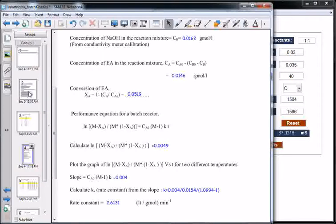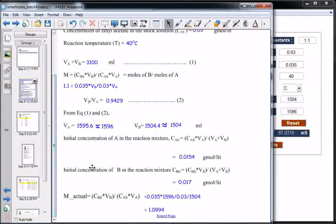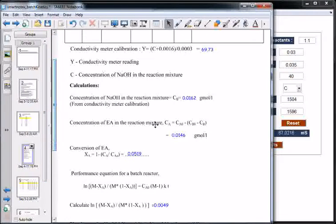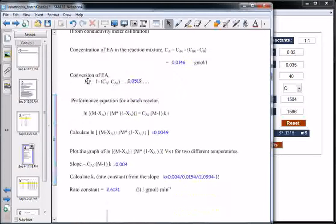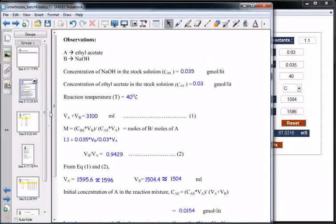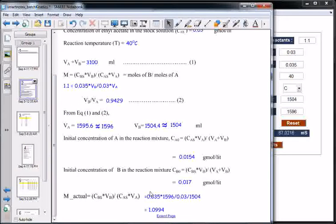Initial concentration of A and B, Ca0 and Cb0, can be calculated using these formulas. Knowing Ca0, one can calculate Ca, concentration of ethyl acetate in the reaction mixture. From Ca0, Ca and Cb0, conversion of ethyl acetate can be calculated. Knowing conversion and molar ratio actual, this actual molar ratio can be calculated from stock concentration of A and B and rounded up volumes of A and B.